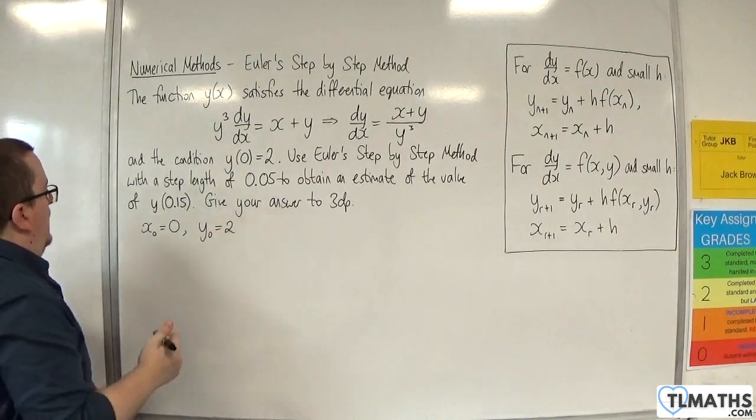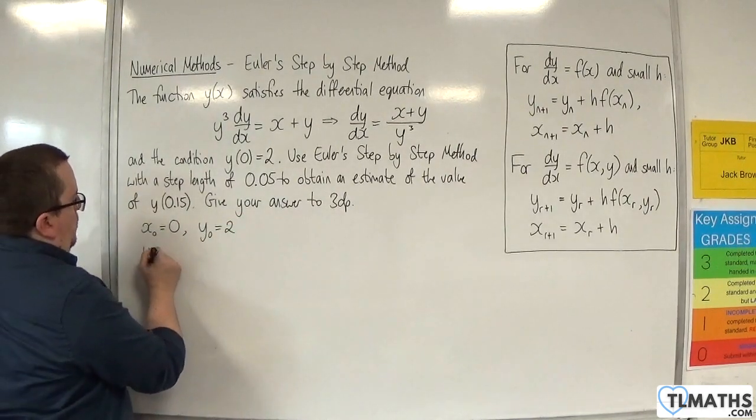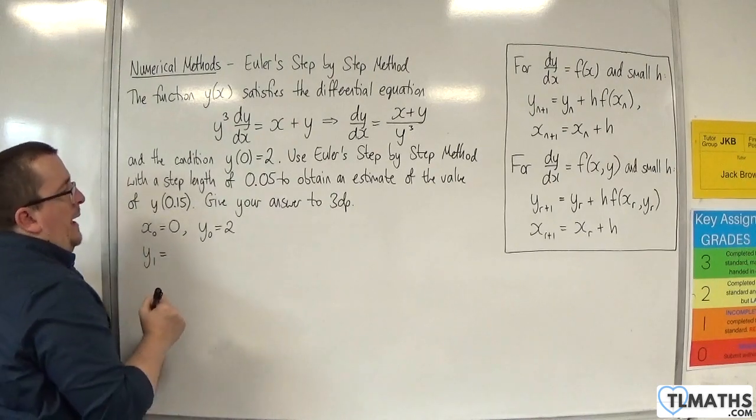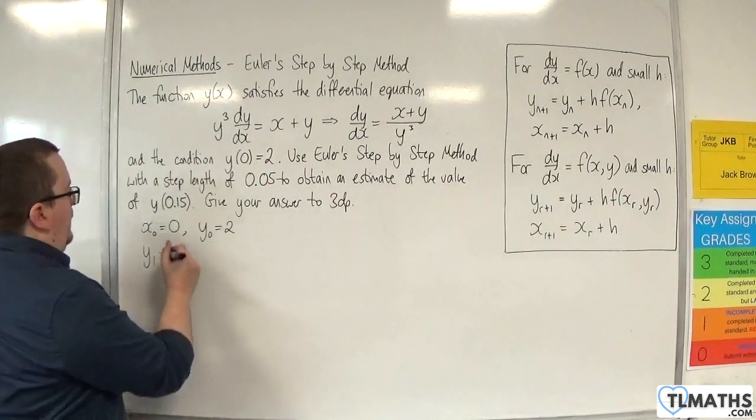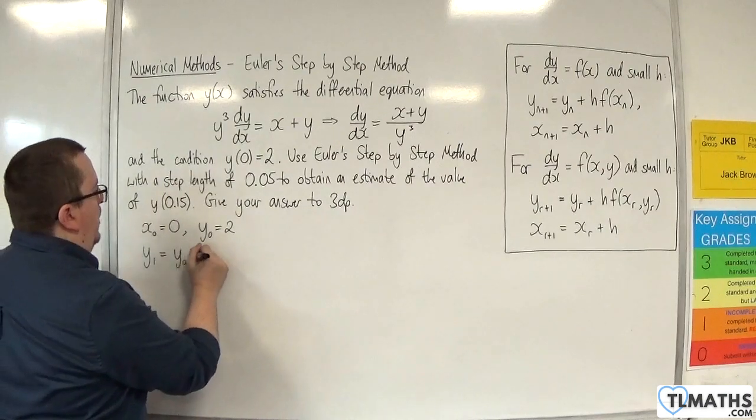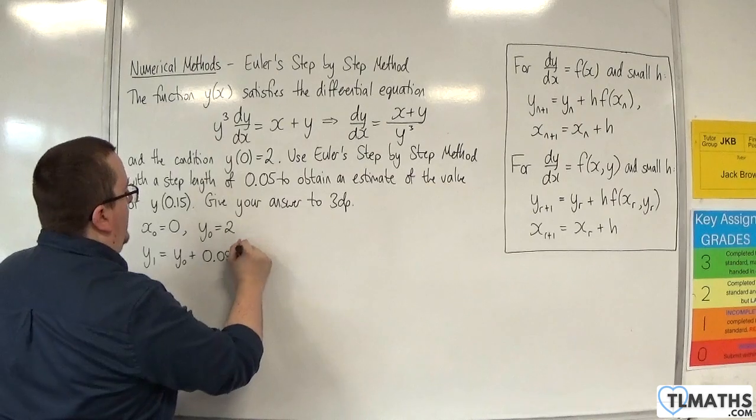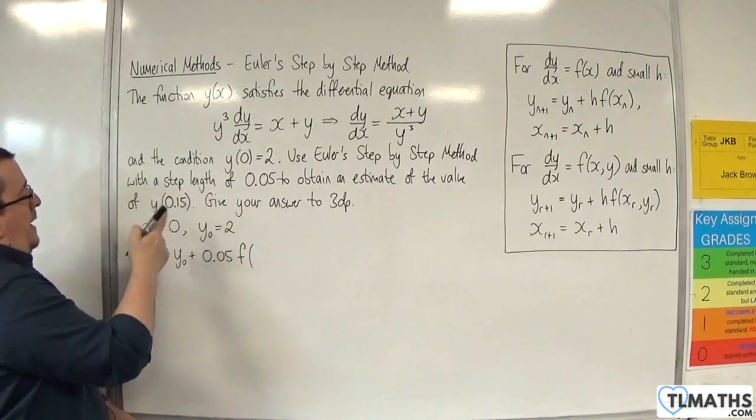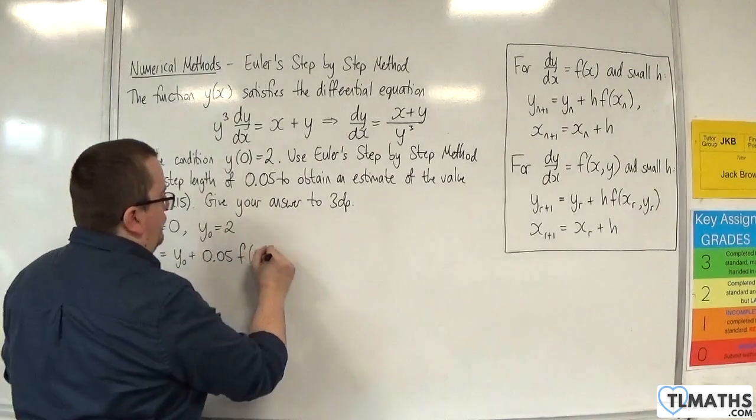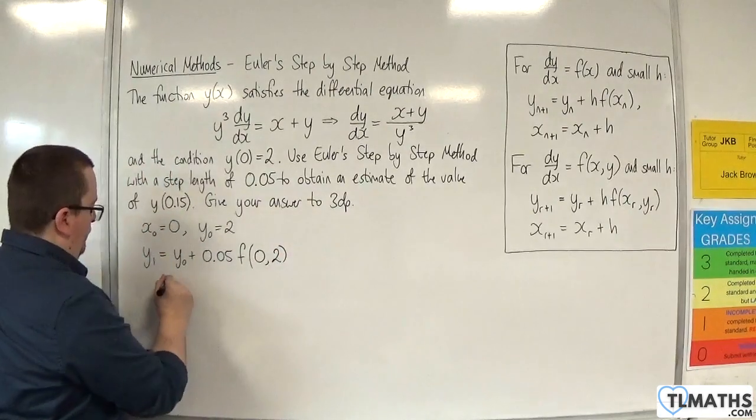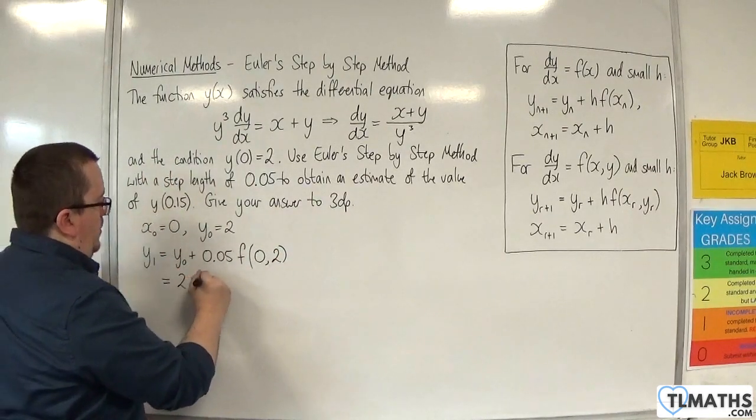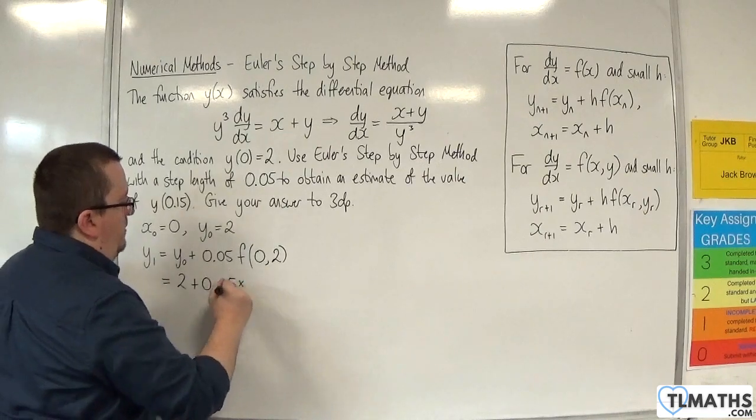Okay, and what we want is y₁, and using this formula here, we know that that's going to be y₀ plus the step length 0.05 times f(0, 2). So y₀ is 2, plus 0.05 times...